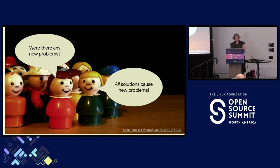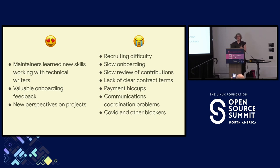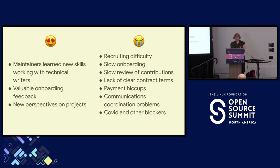For many projects, it was the first time they'd had new contributors specifically for docs. This caused new community problems — it wasn't all great news. Maintainers said they got a lot of value from working with technical writers, but many open source project maintainers do not have experience with recruiting, hiring, and paying technical writers, or reviewing documentation. Communications coordination was also a problem, especially in 2021 when many writers had to drop out of the program because they got sick — COVID was a big issue.